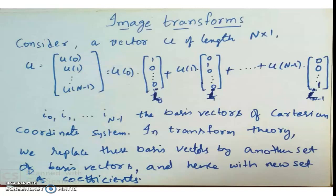We'll move on to the transforms. We are going to see first the one-dimensional case and then extend it to the two-dimensional case using the separability property. Consider a one-dimensional signal represented as a vector u of length n by 1. u equals [u(0), u(1), ..., u(n-1)]. This is like u(0) multiplied with [1,0,0,...,0], u(1) multiplied with [0,1,0,...,0], and these are nothing but i_0, i_1, ..., i_{n-1}, the columns of the identity matrix.